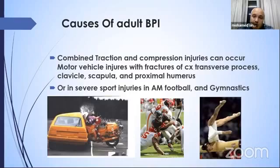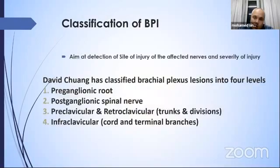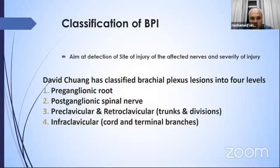Brachial plexus injuries also occur in sport injuries like American football and gymnastics. The aim of classification is to detect the site and severity of injury. They are classified into four groups: preganglionic root injury, postganglionic spinal nerve, supraclavicular and retroclavicular trunk and divisions, or infraclavicular cords and terminal branches.